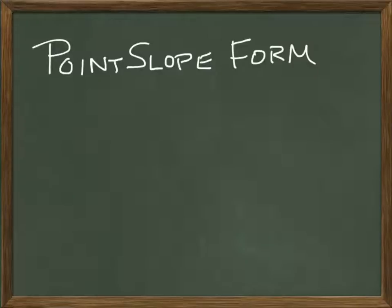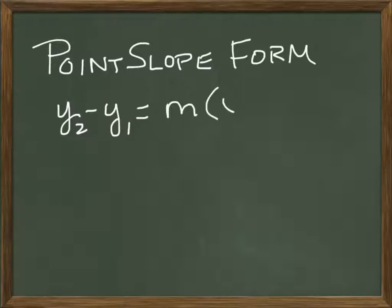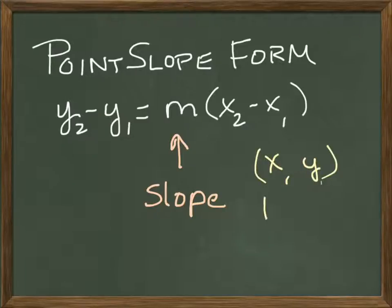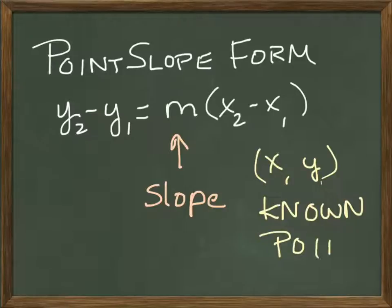The next form we're going to look at is point-slope form. Point-slope form is written as y₂ minus y₁ equals M times x₂ minus x₁, where M is the slope and (x₁, y₁) is the given or known point.